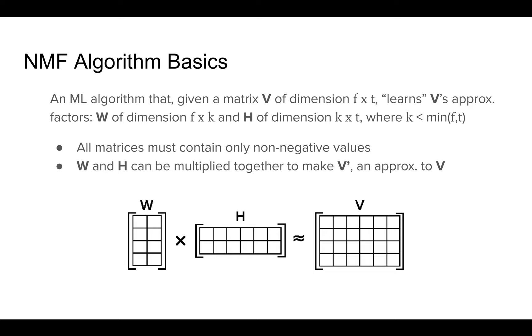So all matrices must contain only non-negative values, as this is the effect of the input matrix being non-negative itself. And this is what allows that parts-based representation. And then the real cool thing about this is that W and H can then be multiplied together to make V prime, which is an approximation to our original matrix that we input V.